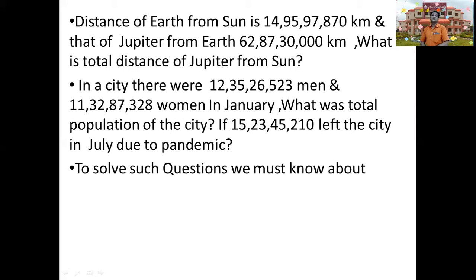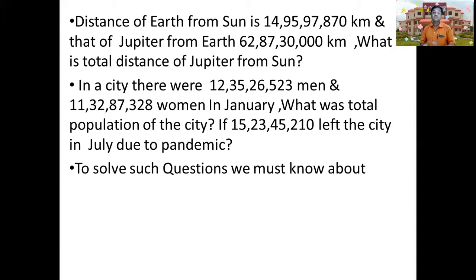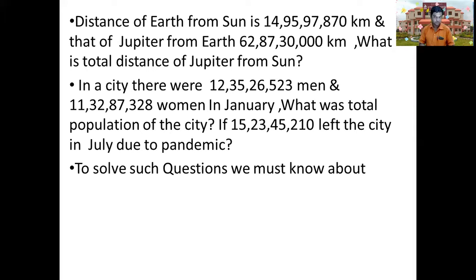The distance of Earth from the Sun is 149,597,870 kilometers, and the distance of Jupiter from Earth is 628,730,000 kilometers. What is the distance of Jupiter from the Sun? In this case we have to add the distance of Earth from the Sun with the distance of Jupiter from the Earth to get the total distance of Jupiter from the Sun.